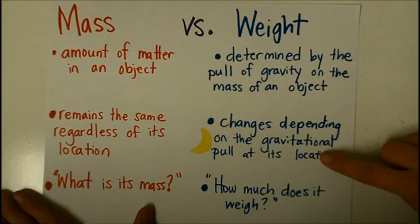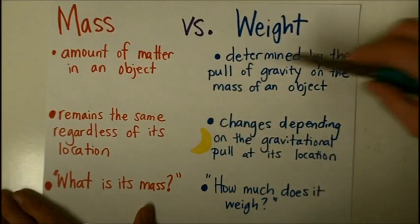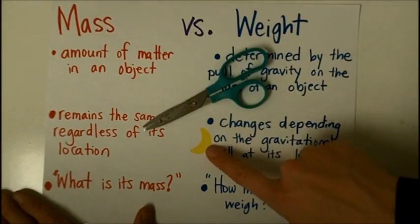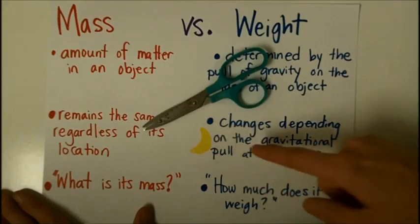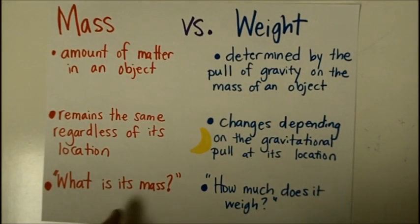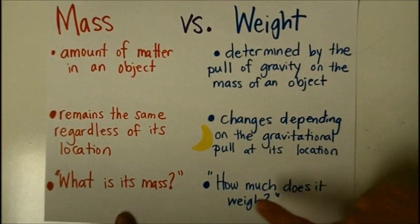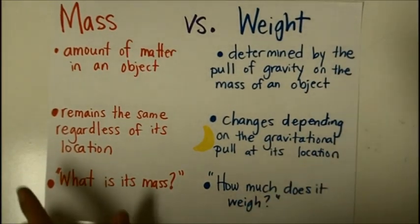But the weight changes depending on the gravitational pull at its location. If you took the same pair of scissors to the moon, they would weigh less because the pull of gravity is less on the moon. Many people use these words interchangeably, and when they ask how much does it weigh, they're really trying to find out what is the object's mass.